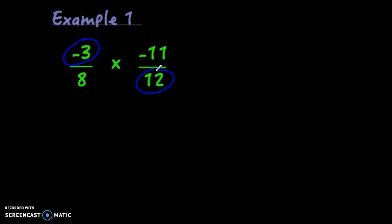3 goes into both. So what I'm going to do is divide those both by 3. Negative 3 divided by 3 is negative 1. 12 divided by 3 is 4. So then what I'm going to do is I'm going to multiply straight across. Negative 1 times negative 11 is positive 11. 8 times 4 is 32. And 11 thirty-seconds can't be reduced. It's already in simplest form, so that's my final answer.